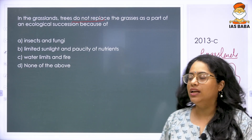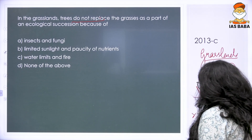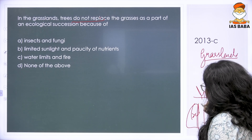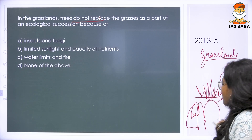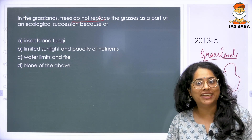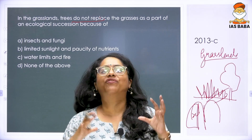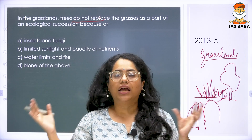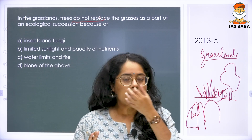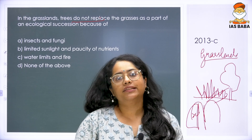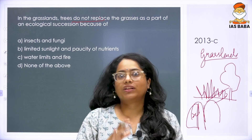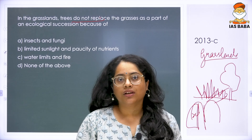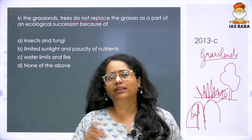What is ecological succession? It is the very sequential progression of one community after another community. A community is a combination of different plants and animals — more than two kinds of plants or animals existing together. What is happening here is that grass is there but after that, trees are not growing — it is staying at grass only. What is the reason?